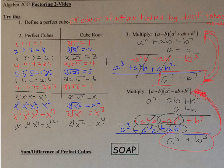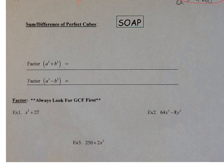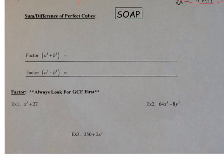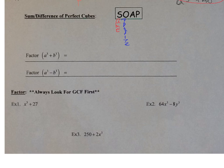We'll call this pattern SOAP: S = Same, O = Opposite, A = Always positive. This will help you with the signs. To factor the sum of perfect cubes A³+B³, set up two parentheses — the second one will be bigger.